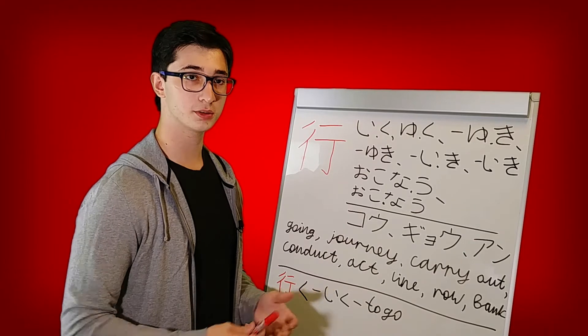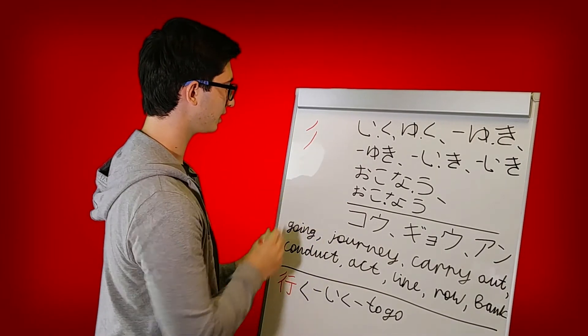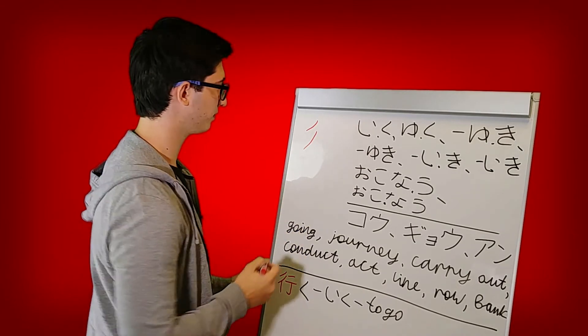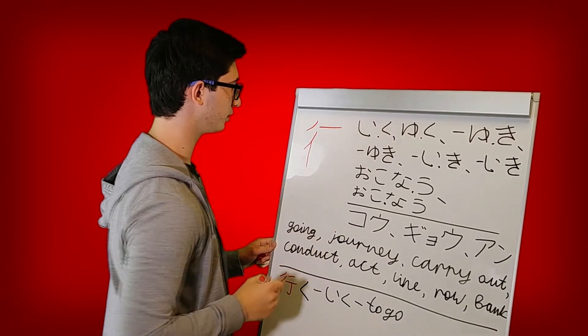So now let's look at the stroke order. So the first stroke goes like this, the next one goes like that. It's a little bit more sloped. And then the next one goes like that. Then the next stroke goes like this from left to right.